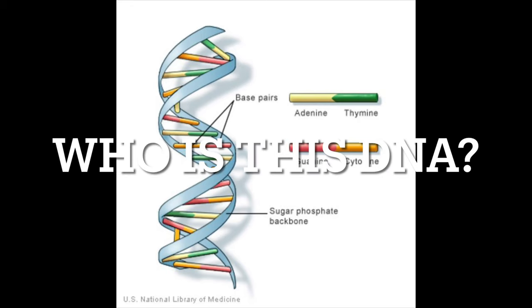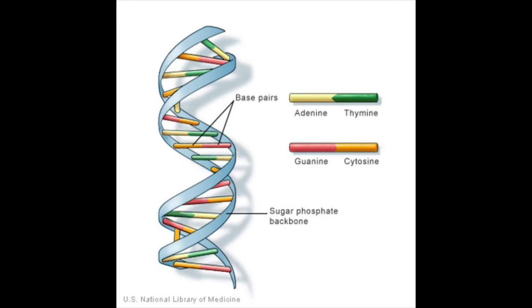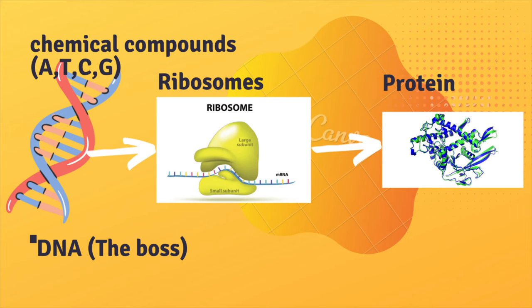DNA has a double helix model with chemical compounds like adenine, thymine, guanine, and cytosine. Imagine DNA is the boss, having some chemical ingredients and ordering its workers — that is, ribosomes — to make protein. The protein is responsible for producing cells, which the human body is made of.